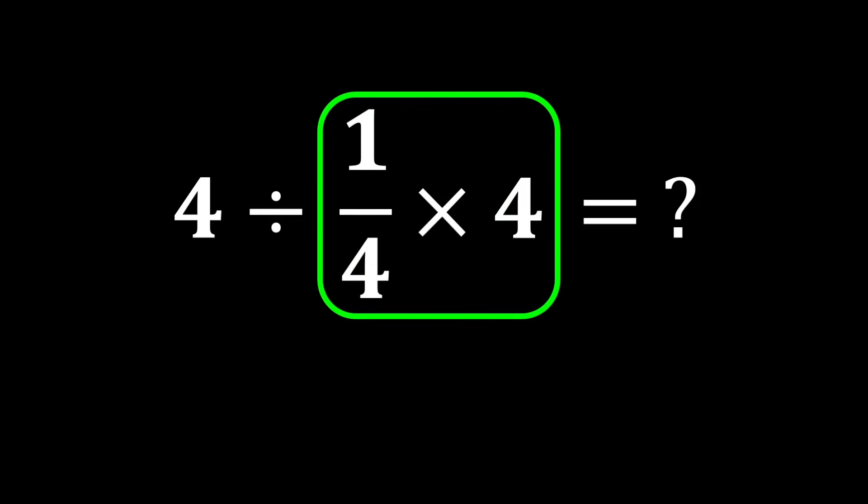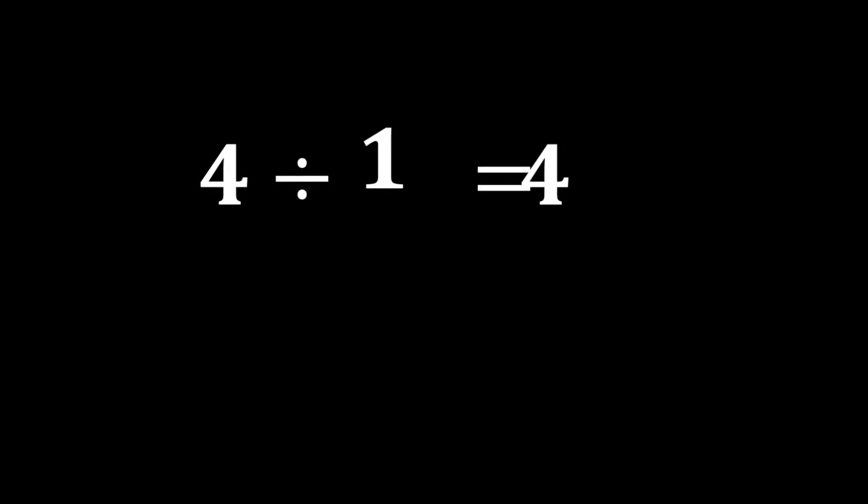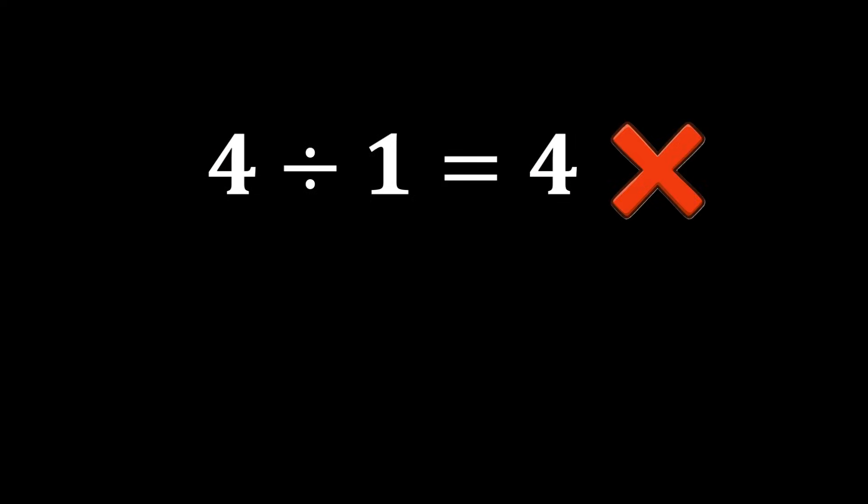First, we perform this multiplication: 1 over 4 multiplied by 4. The 4s cancel each other out, and only the number 1 remains. In the end, 4 divided by 1 gives us 4. But this answer is not correct because we did not follow one of the most important rules of mathematics.